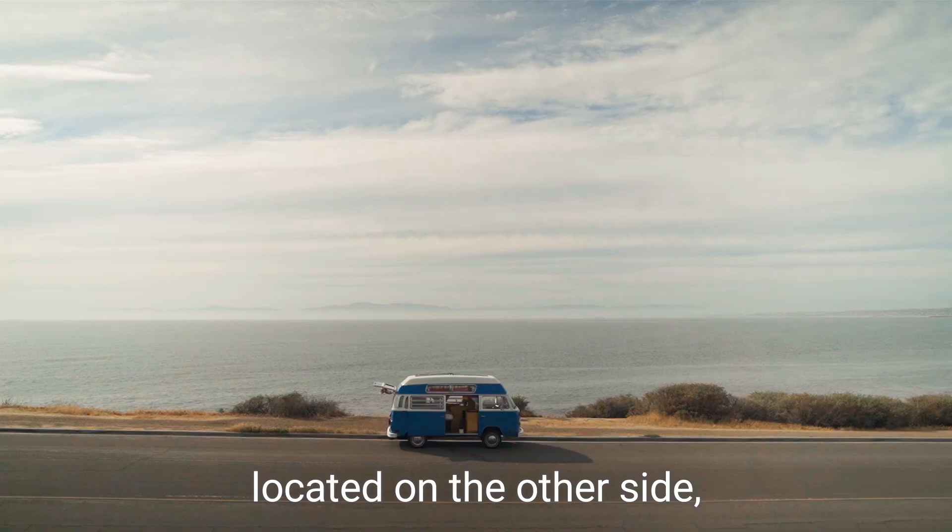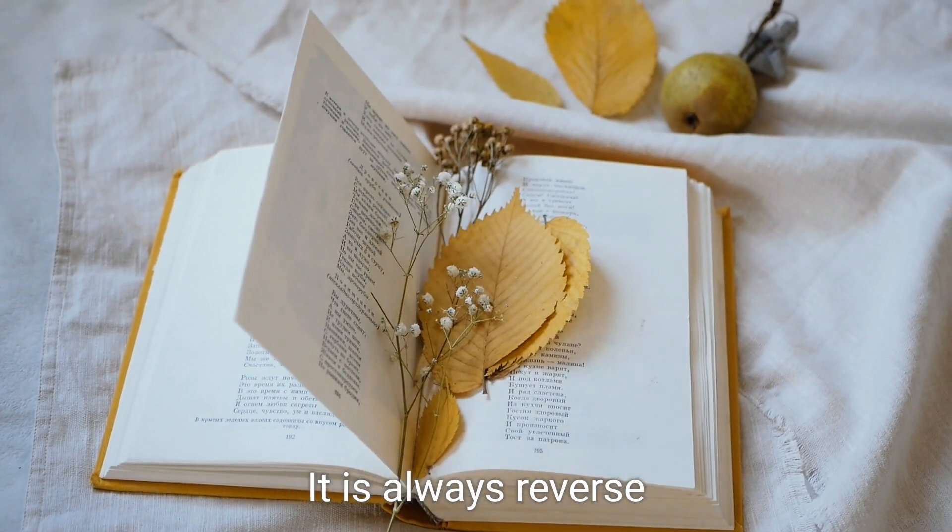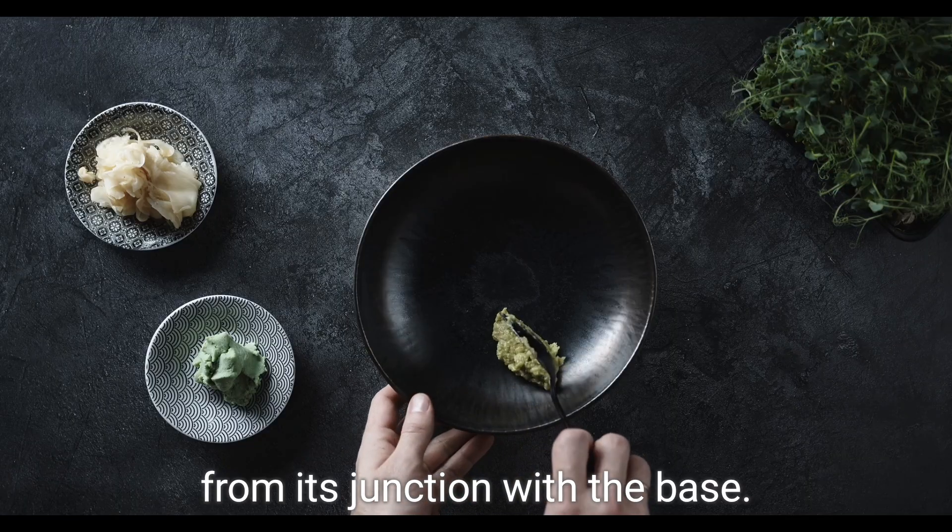Moving on to the collector, located on the other side, it collects the charges. It is always reverse biased to remove charges from its junction with the base.